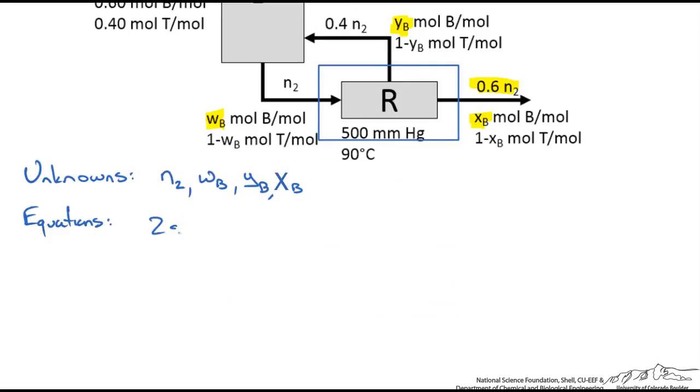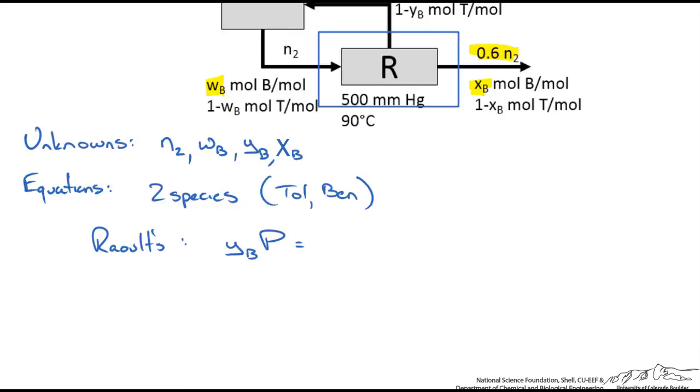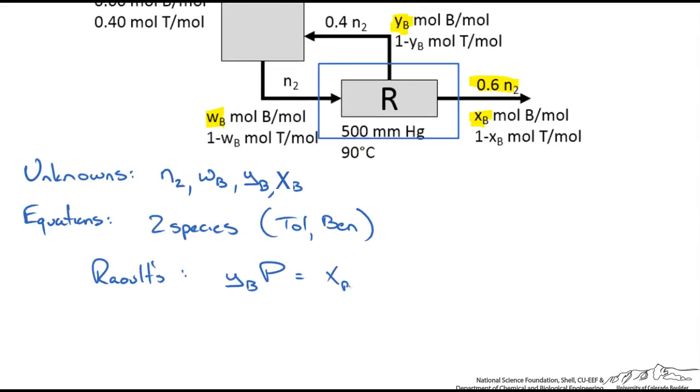We can write two species balances for toluene and benzene, and two Raoult's law equations since we have vapor liquid equilibrium coming out of the reboiler. Recall that Raoult's law states that the partial pressure of a species, YB times the total pressure, equals the mole fraction XB times P sat of benzene at the reboiler temperature.